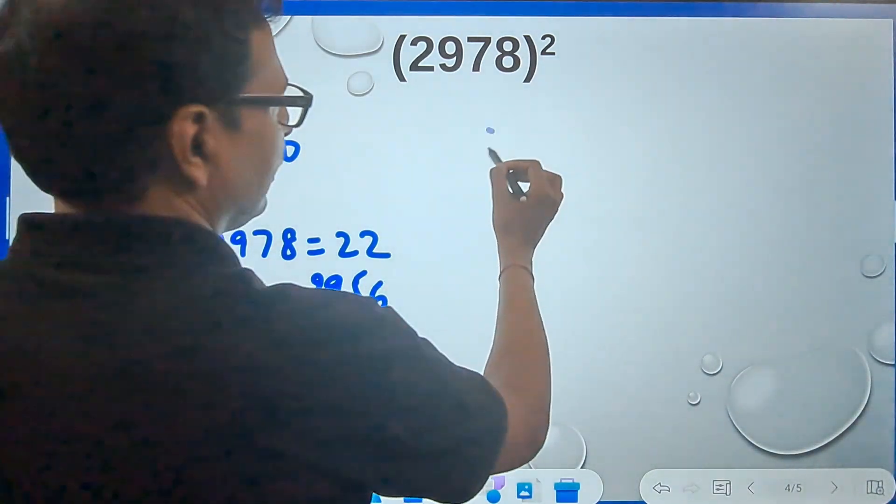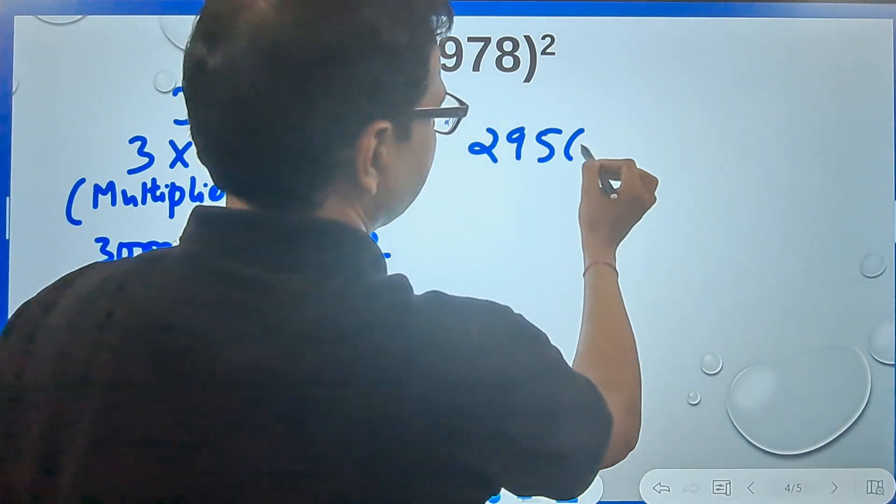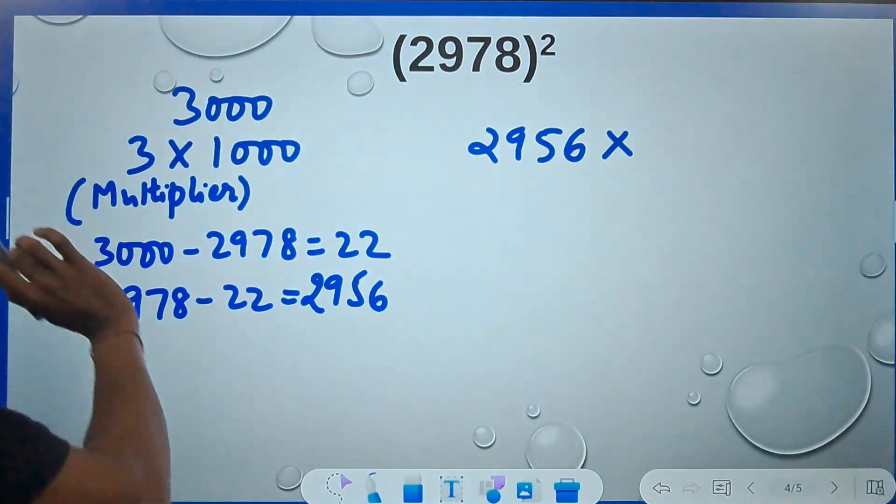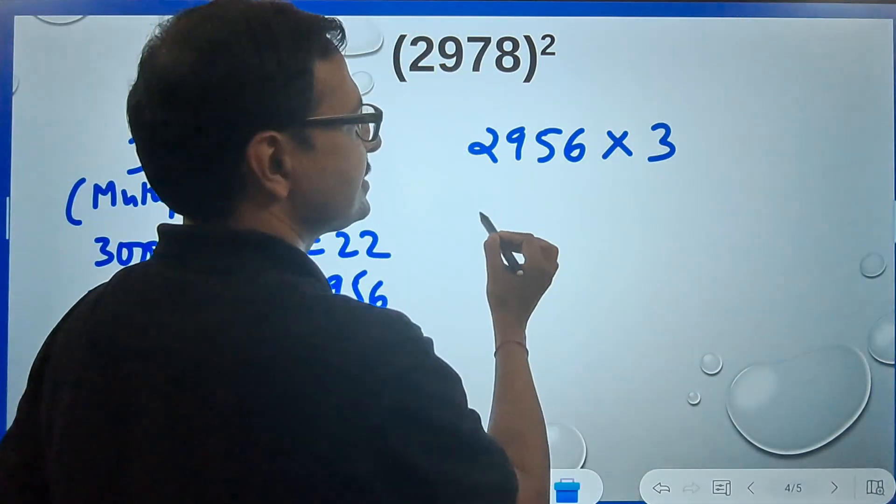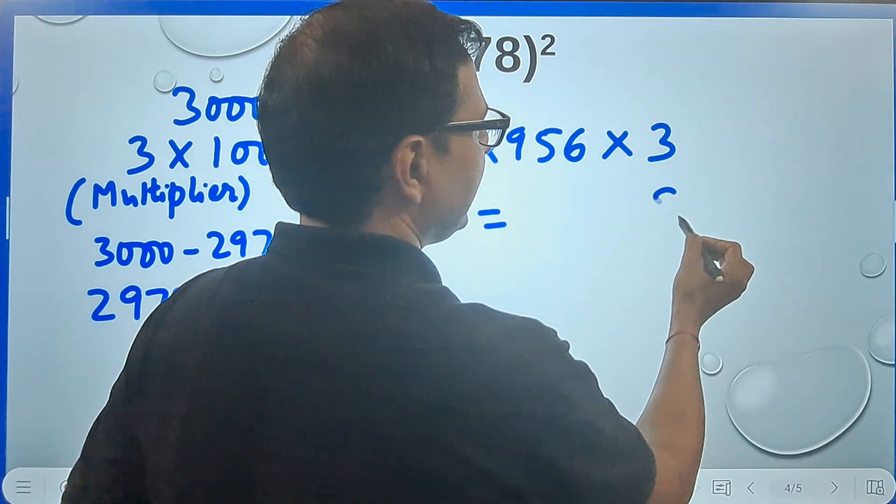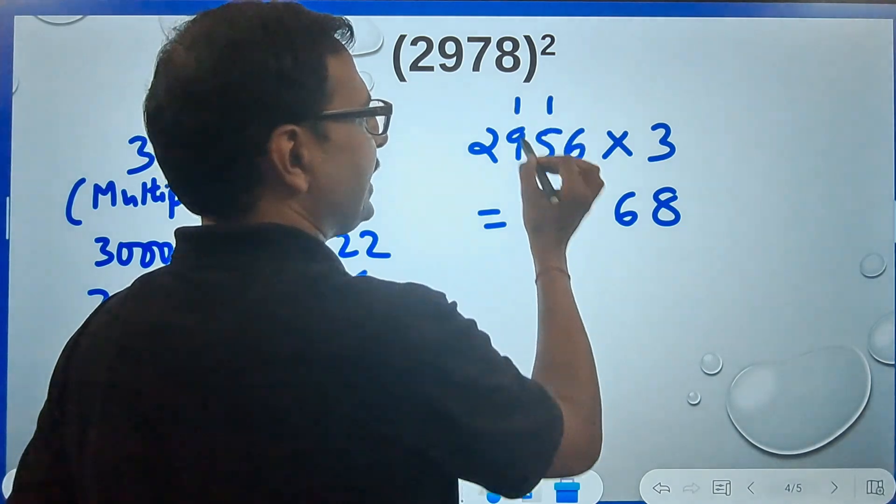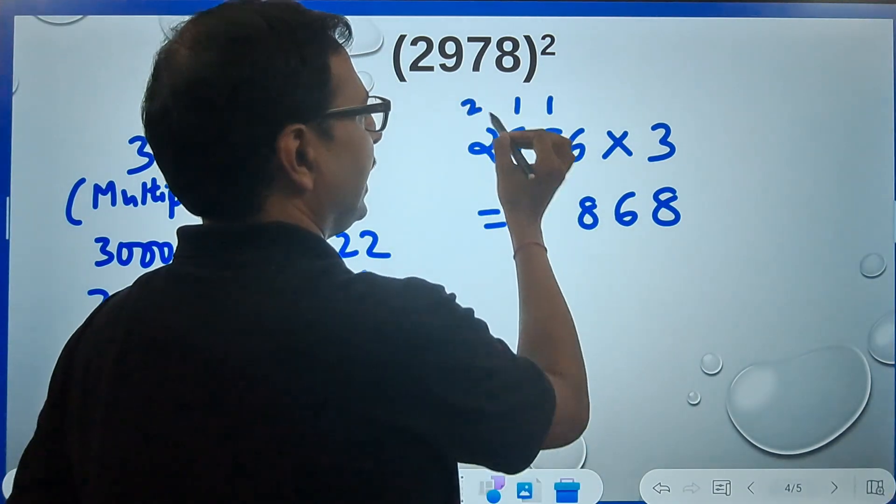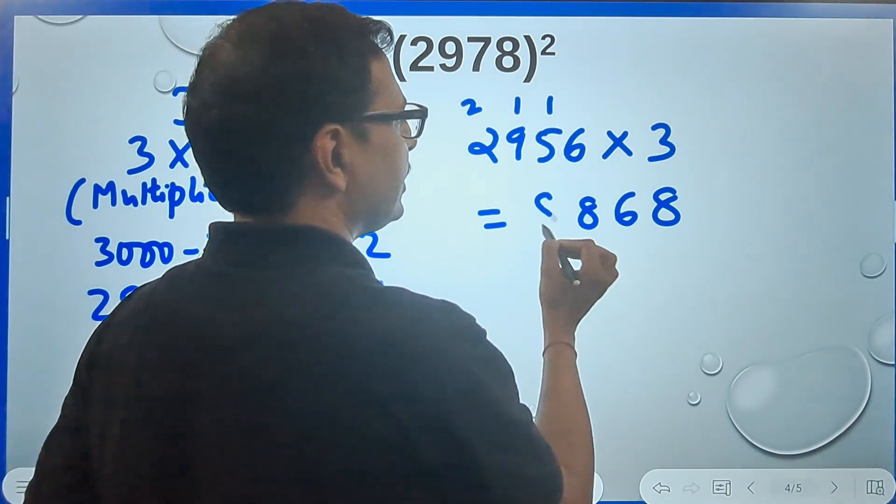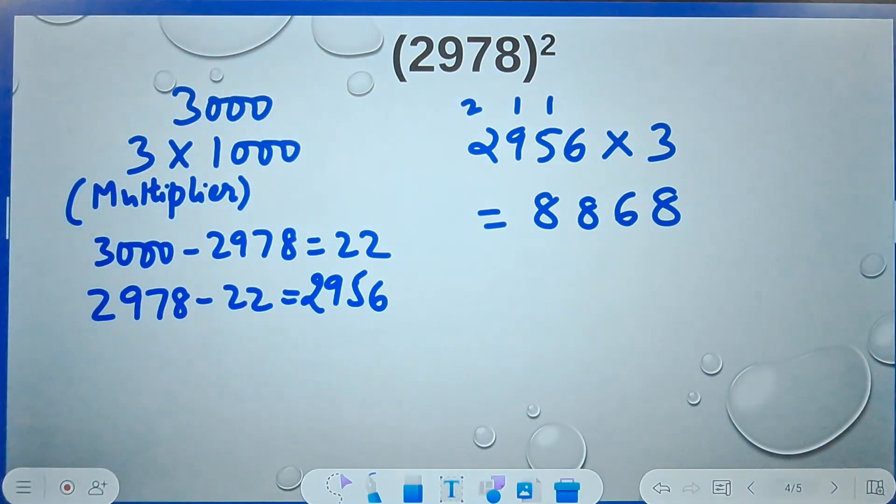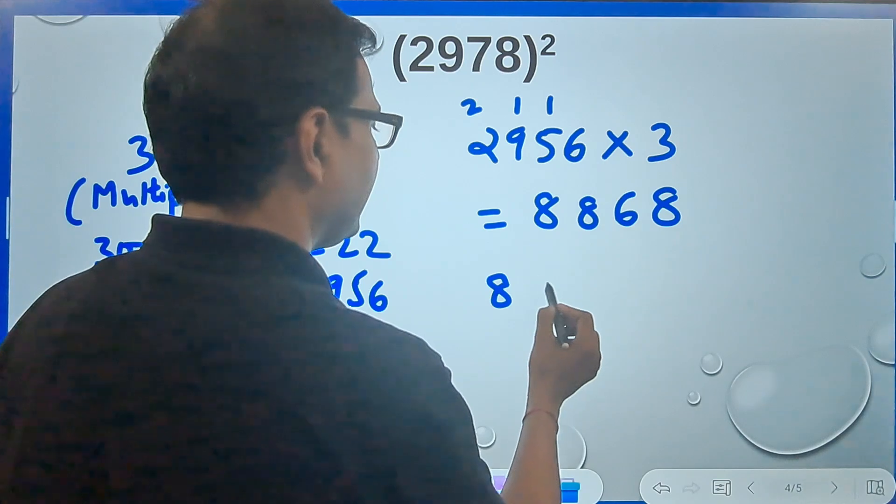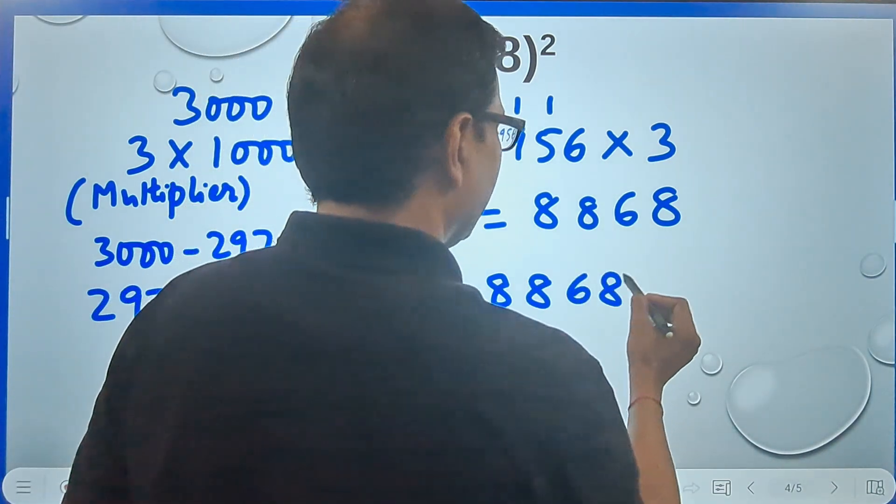Now this 2956 is to be multiplied by the multiplier 3. So 2956 multiplied by 3, you just need to multiply this: 6×3 are 18, 8, 1 carry, 15, 16, 6, 1 carry, 27, 28, 8, 2 carry, and then 6 and 2, 8. So 8868, this becomes the first part of my answer, 8868, I'll put a slash.